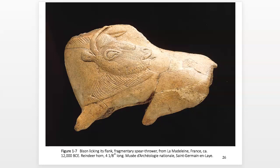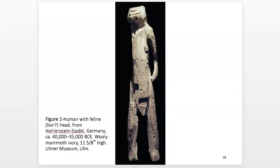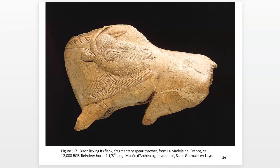They would have carved this onto the horn with a sharp point like a burin — similar to what I described with the lion-headed figure — using the burin for the details. We can see a lot of detail: the horns, eyes, ears, nose, nostrils — it's a pretty detailed little piece for being only four and a half inches long.